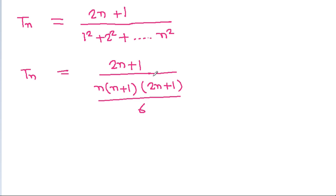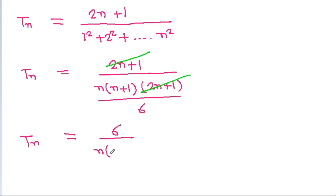The factor (2n+1) in the numerator and denominator will get cancelled, and tn simplifies to 6 divided by n times (n+1).